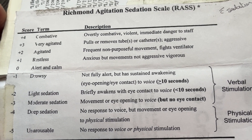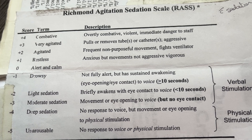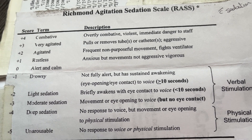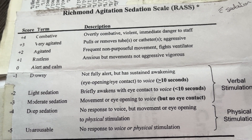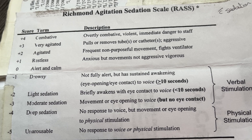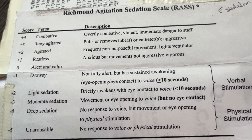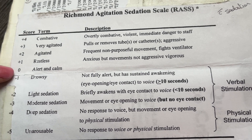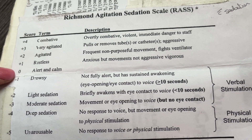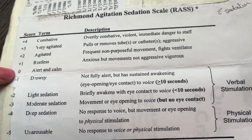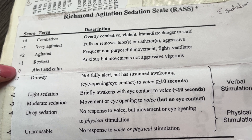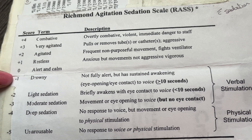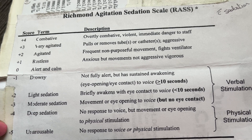If you walk in on your patient and they are sitting there, they look at you, they talk with you, and they're having normal conversation — that's alert and calm. That's the zero, and that's the ideal state. As we go up the scale, these are increasing levels of agitation, and as we go down the scale it's increasing levels of sedation.